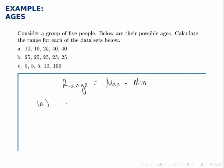For the first one, we have numbers from 10 to 40, so the range is 40 minus 10, or 30.